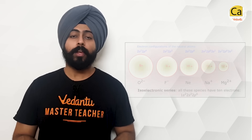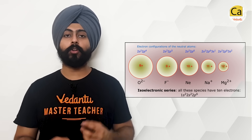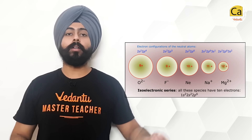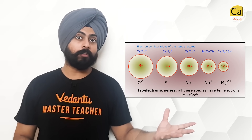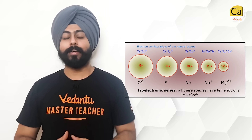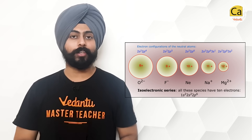For ionic radius, the important thing to remember is that if you take a bunch of isoelectronic species, the one with the least number of protons will have the largest radius, and the one with the most protons will have the smallest radius. The example is shown on the screen.